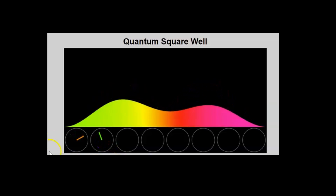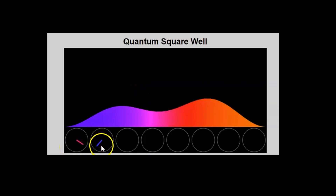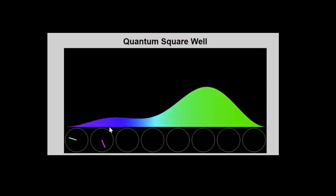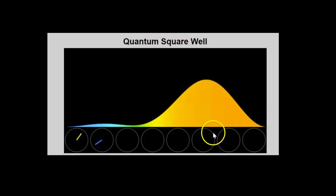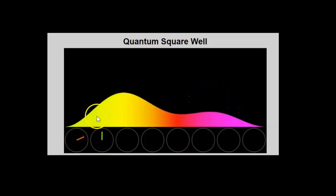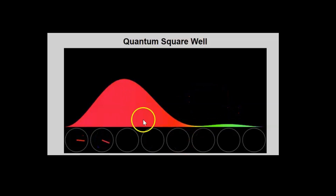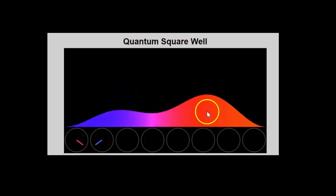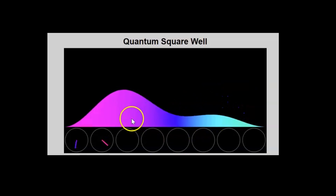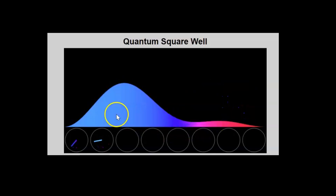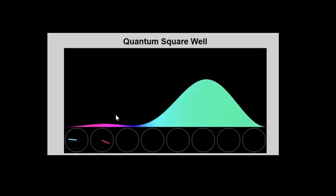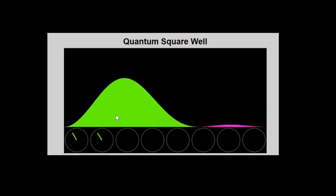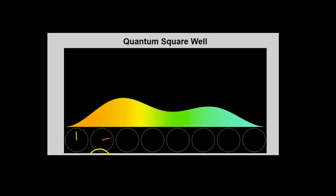This is the probability density as a function of time when you're in a linear combination of eigenstate 1 and eigenstate 2. As you can see, the probability of finding the particle oscillates between the right side of the box and the left side. Right now there's a high probability of finding it on the right, then it switches to the left. This is what happens when you're in a linear combination of two eigenstates.